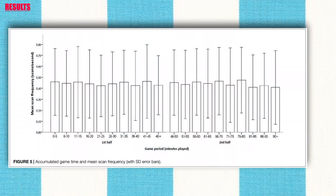Game state was represented by game standing and accumulated game time. Game standing — whether the team is winning, losing, or drawing — was significantly but marginally linked to scan frequency. Post-hoc tests showed that scan frequency was higher when the team is losing than when drawing; there were no significant differences compared to winning. For game time, scanning frequency was relatively stable throughout the first half but less stable in the second half, with a significant difference between time phases, though post-hoc tests with Bonferroni adjustments showed no significant differences.